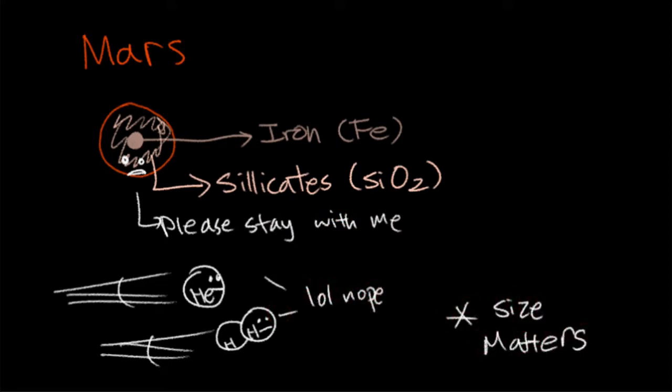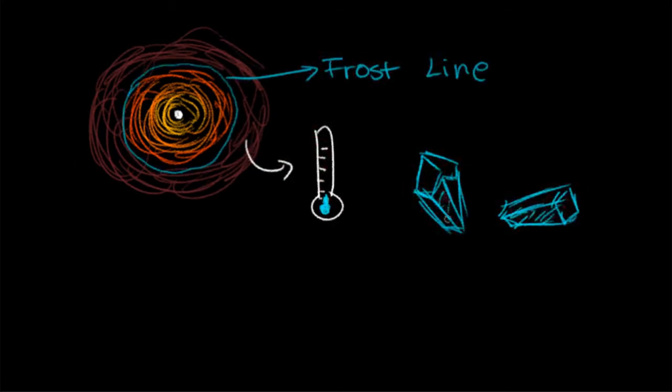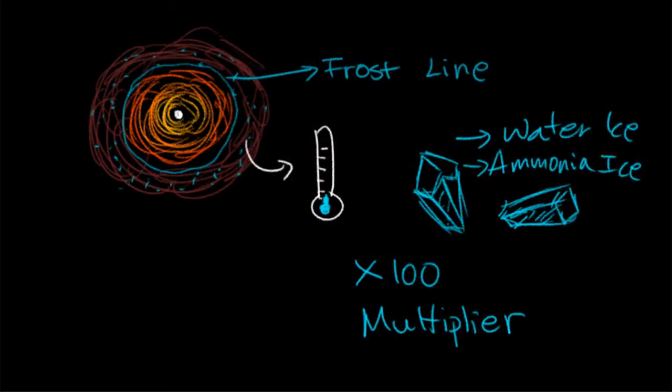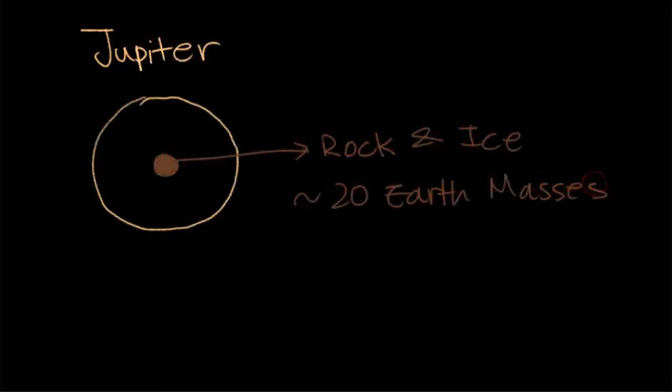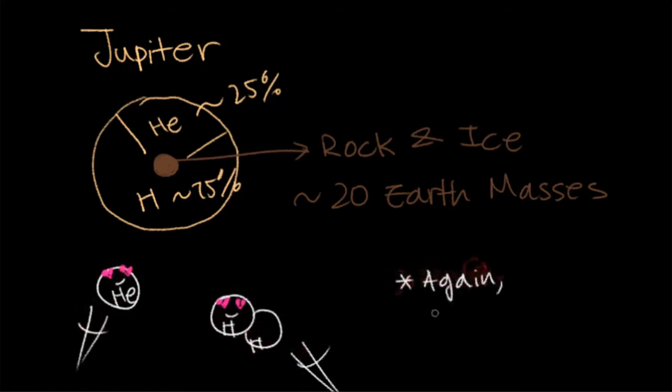Further away from the protostar, the temperature is cool enough for ice crystals to form. These ice crystals are more abundant, thus the planetesimals can grow massive enough for the gravity to attract large amounts of gases, such as hydrogen and helium, forming a thick atmosphere. As a result, the gas giants are larger than terrestrial planets.